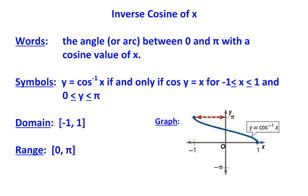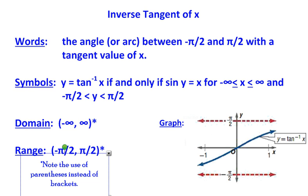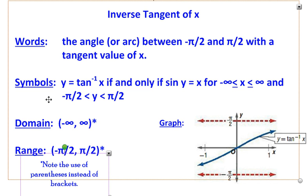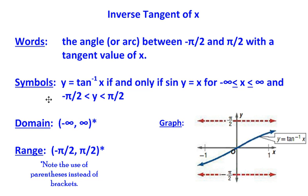Next, we have the inverse tangent graph. So we can see inverse tangent in words, the angle or arc between negative π/2 and π/2 with a tangent value of x. You see the symbols, the domain, the range. Notice they used parentheses instead of brackets here. That tells us that negative π/2 and π/2 are not included in the range. And as a result, you see asymptotes at π/2 and negative π/2 in the graph.